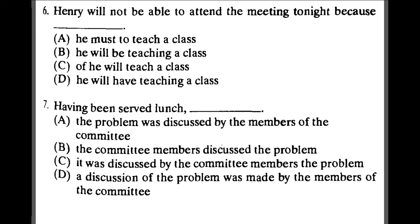Number six: 'Henry will not be able to attend the meeting tonight.' A — 'because he must teach a class' — is wrong. C — 'he will teach a class' — is a little bit weird. D — 'he will have teaching class' — is also not okay. B — 'he will be teaching a class' — is the best answer for number six.